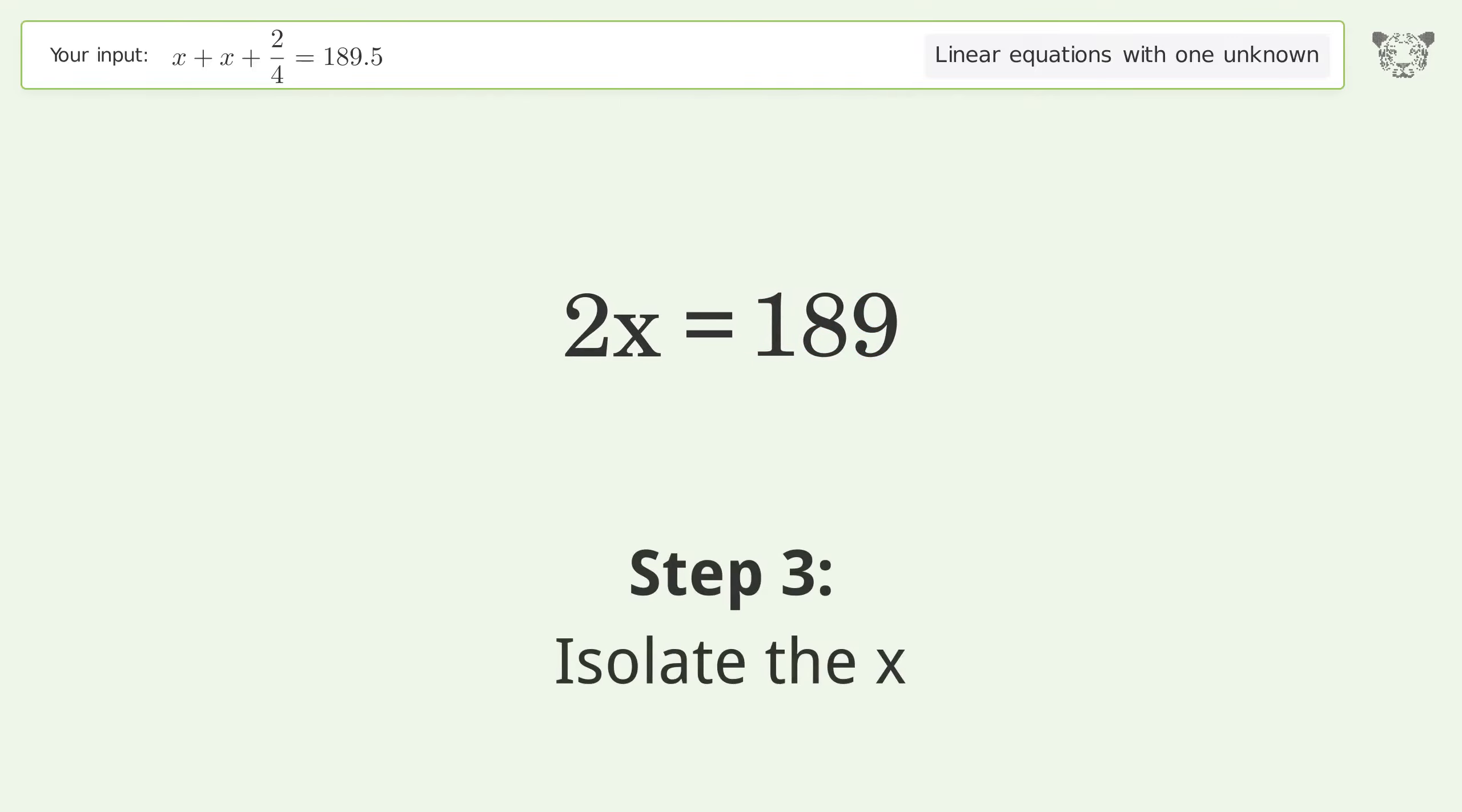Isolate the x, divide both sides by 2. Simplify the fraction. And so the final result is x equals 189 over 2.